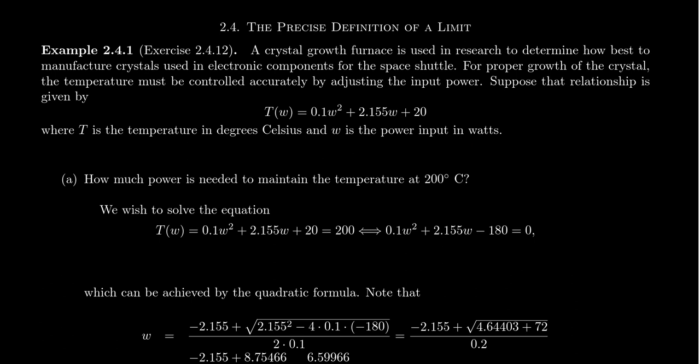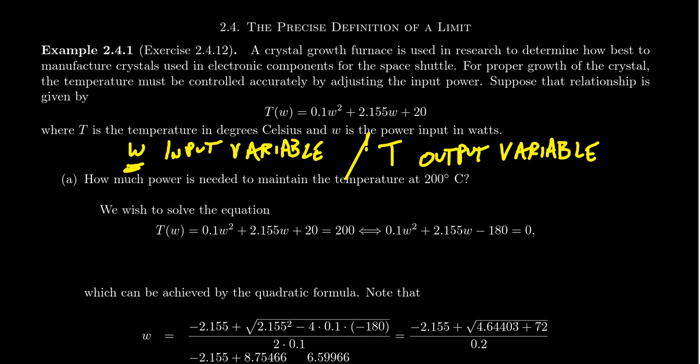This is important to remember when we have a function relationship, that you essentially have two variables in play. There's the variable W here, which in our situation is our input variable. This is the variable we actually have direct control over. We control how much power is entering the system. On the other hand, T here is what we could call the output variable, or we could call it the indirect variable.